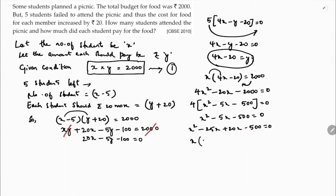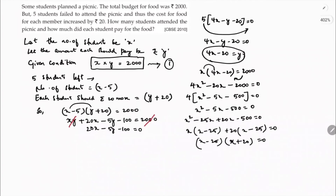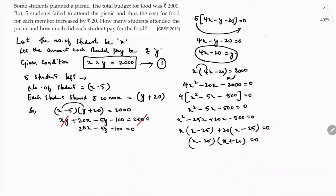Factorizing x² − 5x − 500 = 0: the factors of 500 are 25 and 20, so we get (x − 25)(x + 20) = 0, giving x − 25 = 0 or x + 20 = 0.